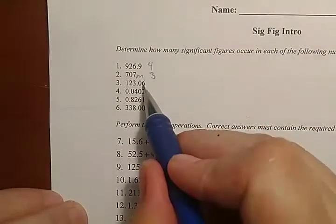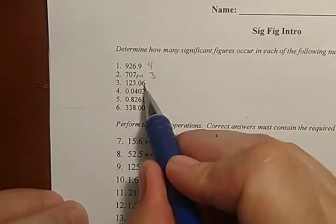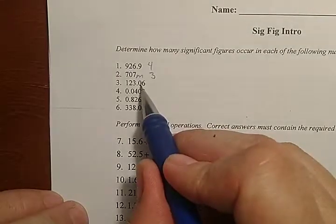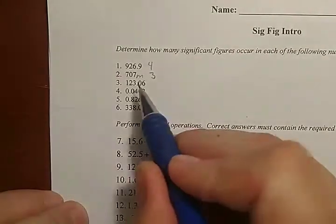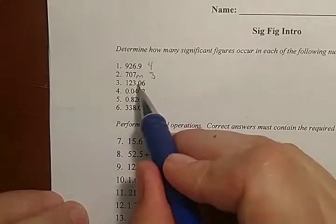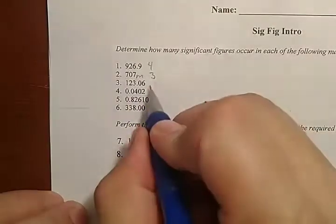The same thing applies here. If it can measure the tenths place, it can measure the hundredths place. It can measure the tenths place, right? So, it measured one, two, three, zero, and six, and that's five significant figures.